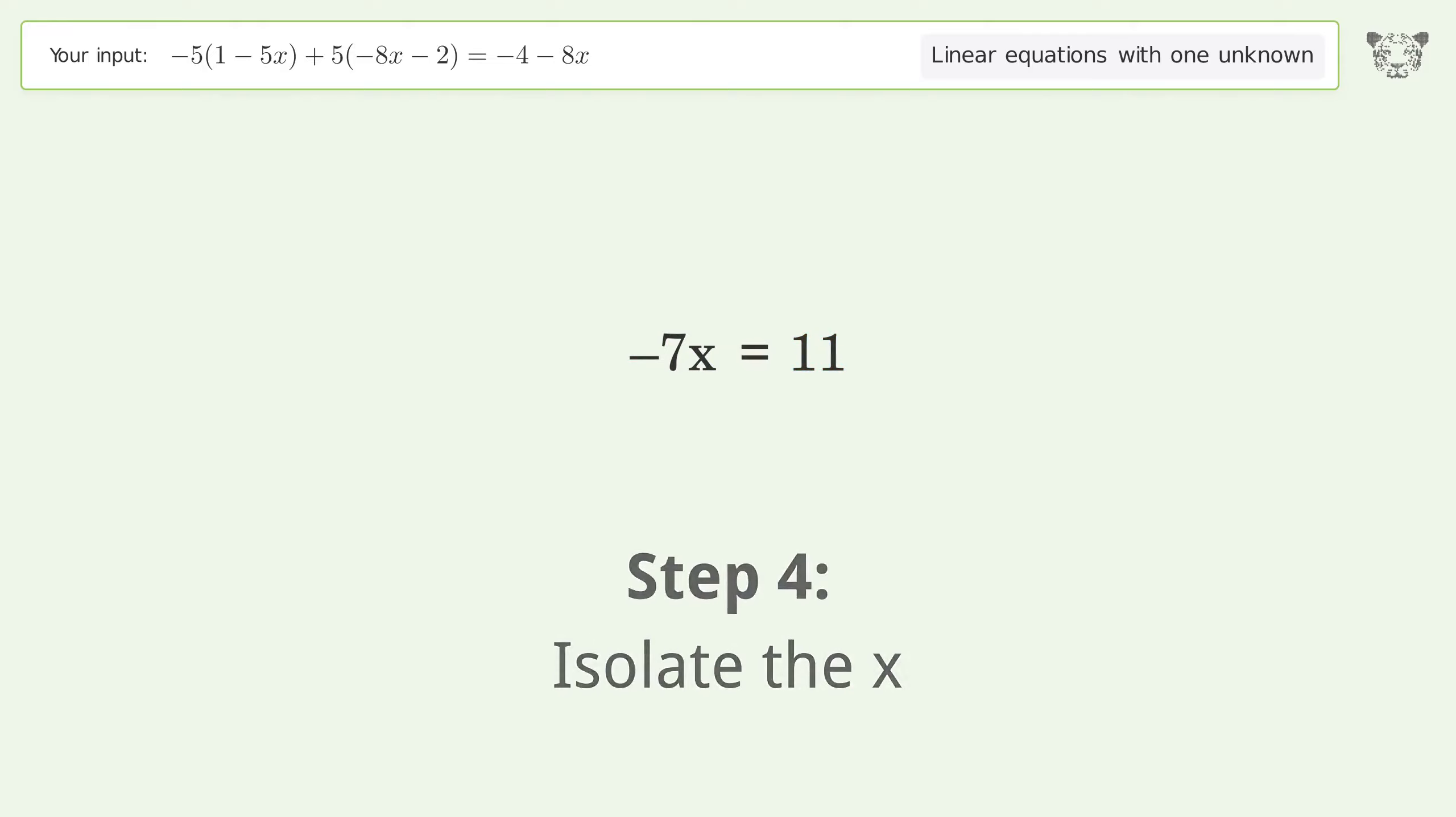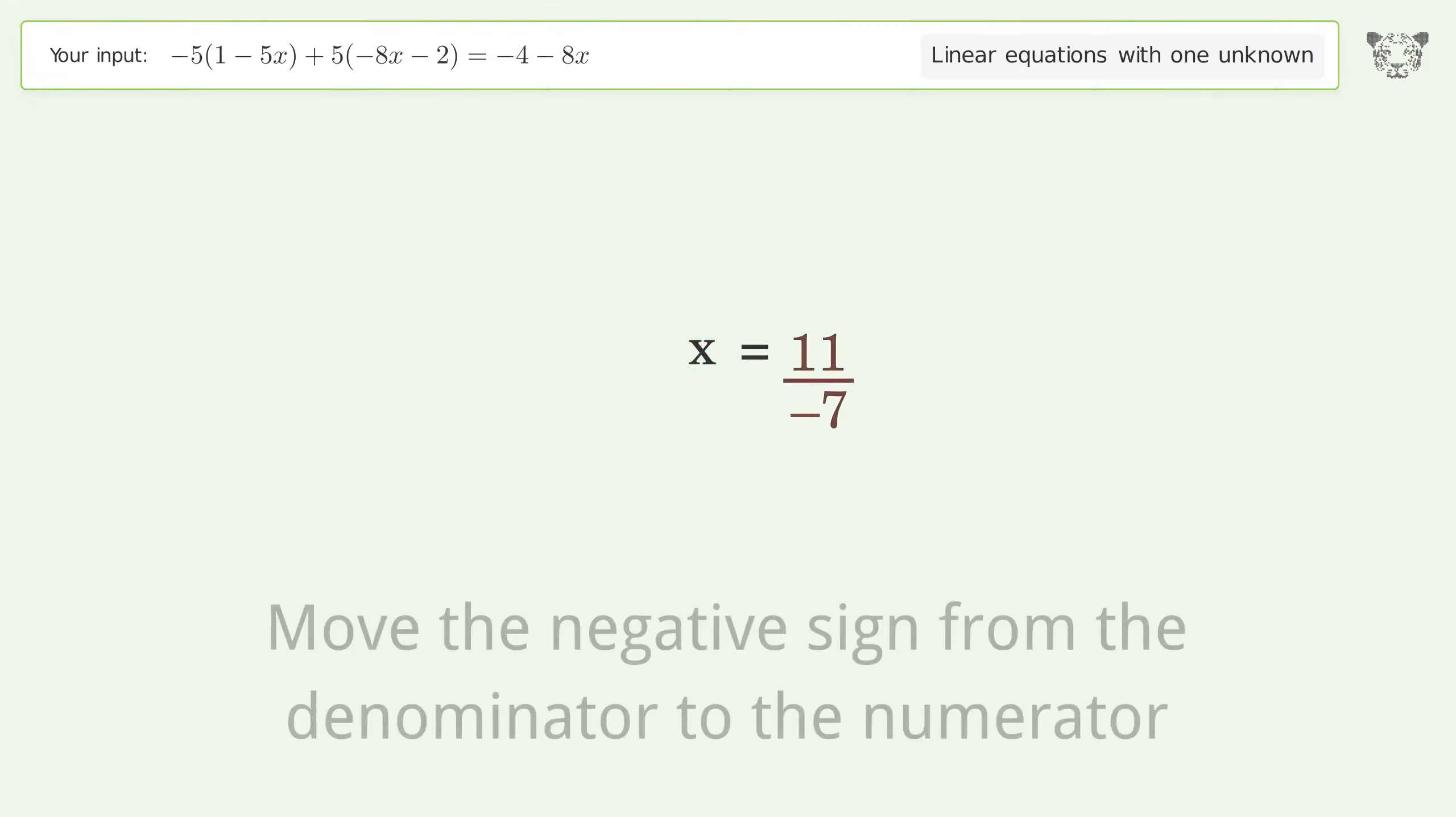Isolate the x by dividing both sides by negative 7. Cancel out the negatives. Simplify the fraction. Move the negative sign from the denominator to the numerator.